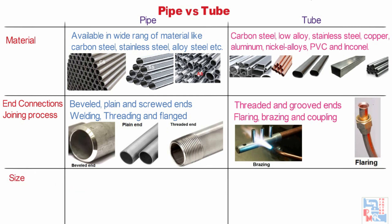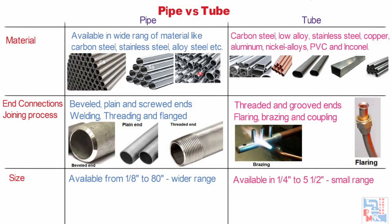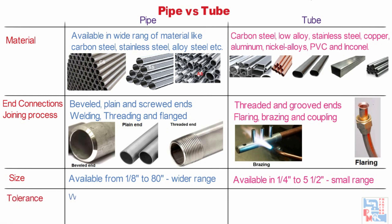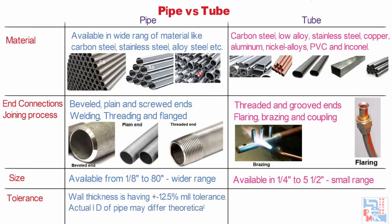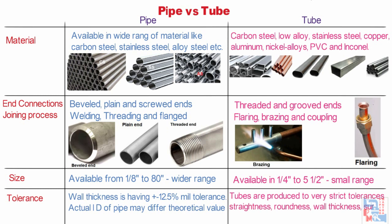Now we will talk about size. Pipes are available in a wide range from 1/8 inch (0.25 inches) to 80 inches, whereas tubes are available in a smaller range from 1/4 inch to 5.5 inches. Regarding tolerance, pipe wall thickness has ±12.5% mill tolerance, so the actual ID of a given pipe may differ from the theoretical value. In the case of tubes, steel tubes are produced to very strict tolerances and undergo several dimensional quality checks such as straightness, roundness, wall thickness, surface, etc. during the manufacturing process.